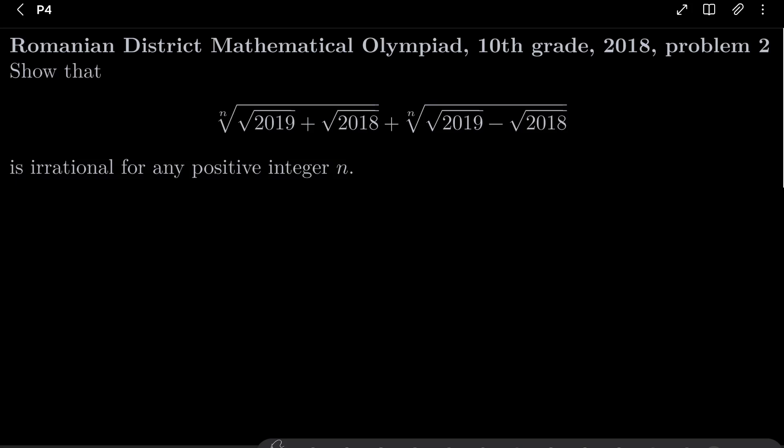We wish to show that the nth root of (√2019 + √2018) plus the nth root of (√2019 - √2018), this expression is irrational for any positive integer n.